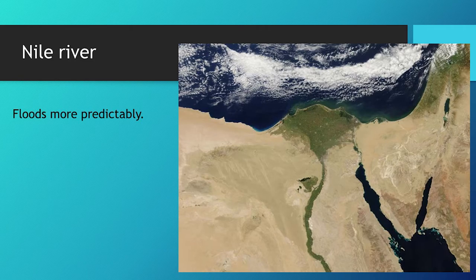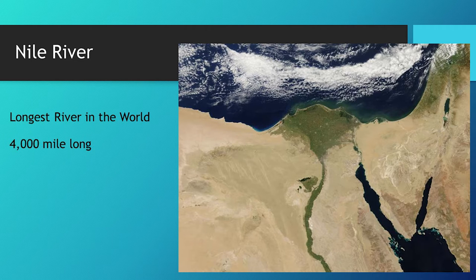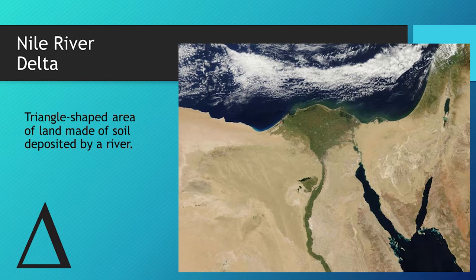Here's the Nile river. You can see this triangle-looking shape right there — that's the Nile Delta. That's where you can get your food and grow your crops. It's the longest river in the world. Make sure you know where the Nile Delta is.